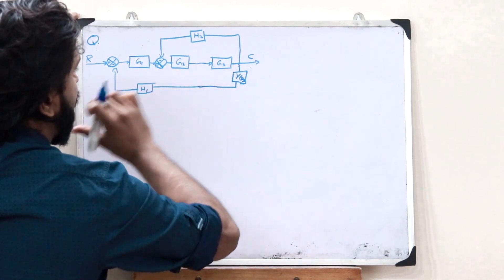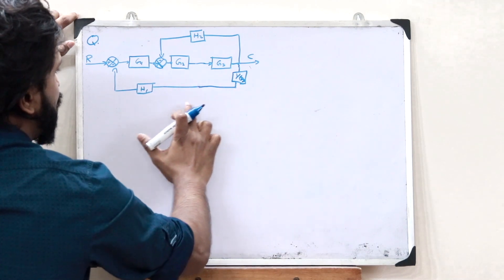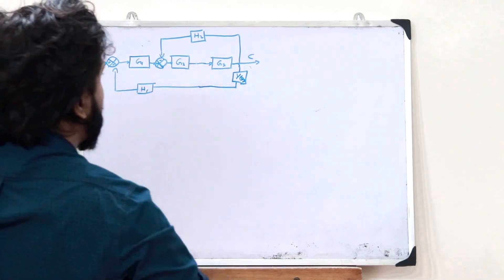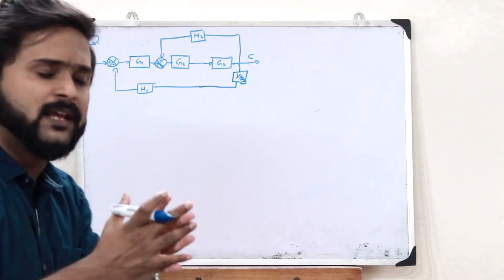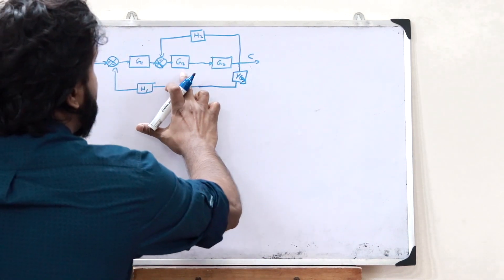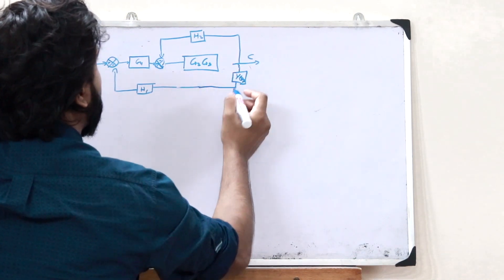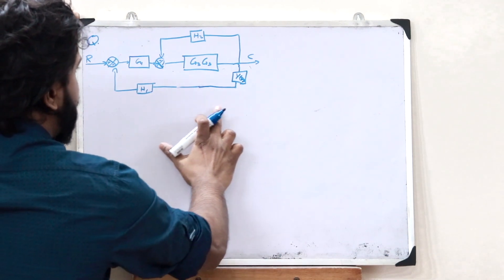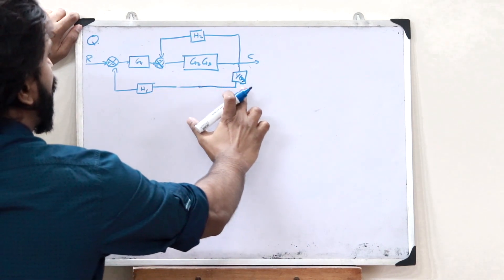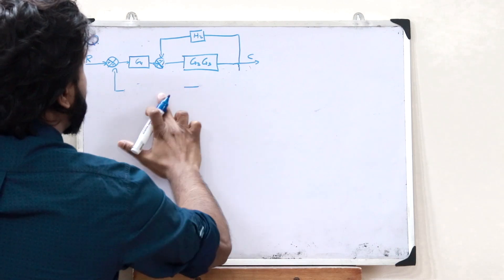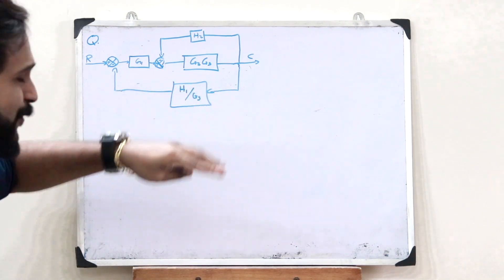Once we've moved the branch, we observe two pairs of series blocks. Two blocks in series are reduced by simple multiplication: G2 and G3 combine into a single block with gain G2·G3. Similarly, H1 and 1/G3 in series multiply to give H1/G3.